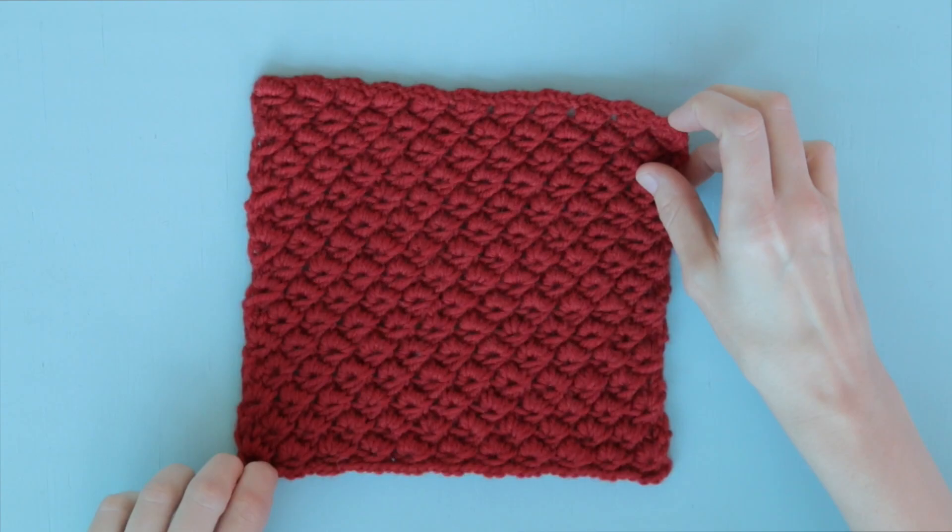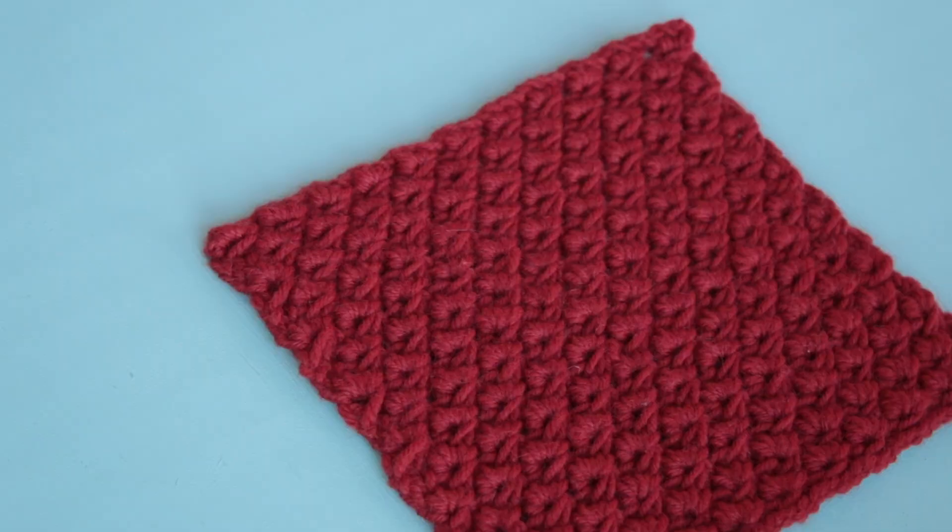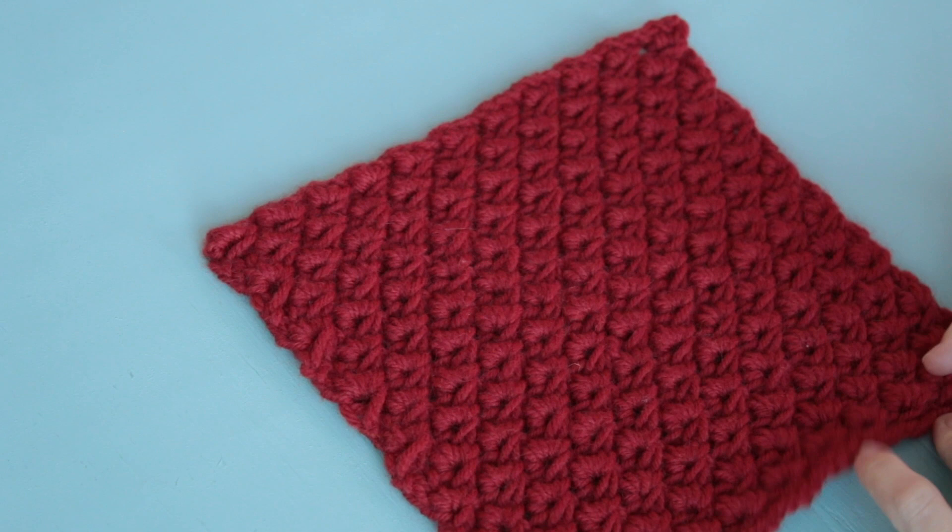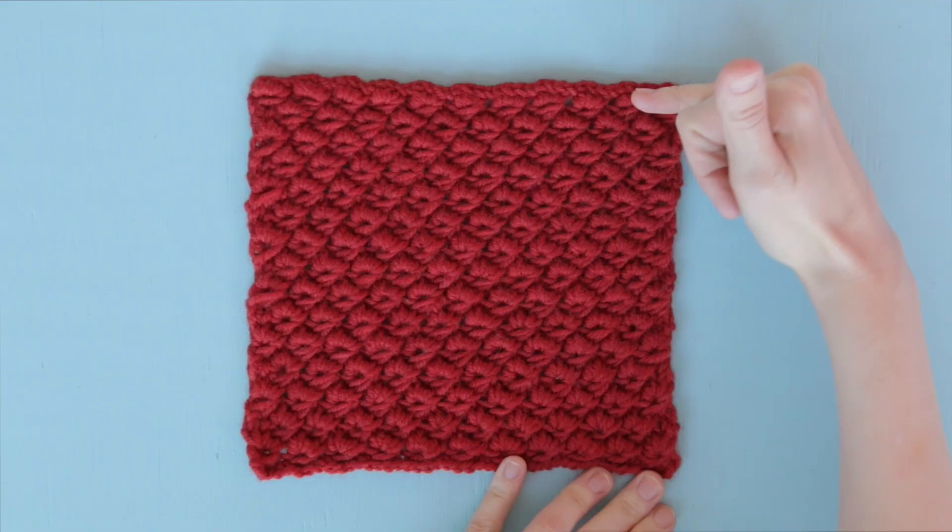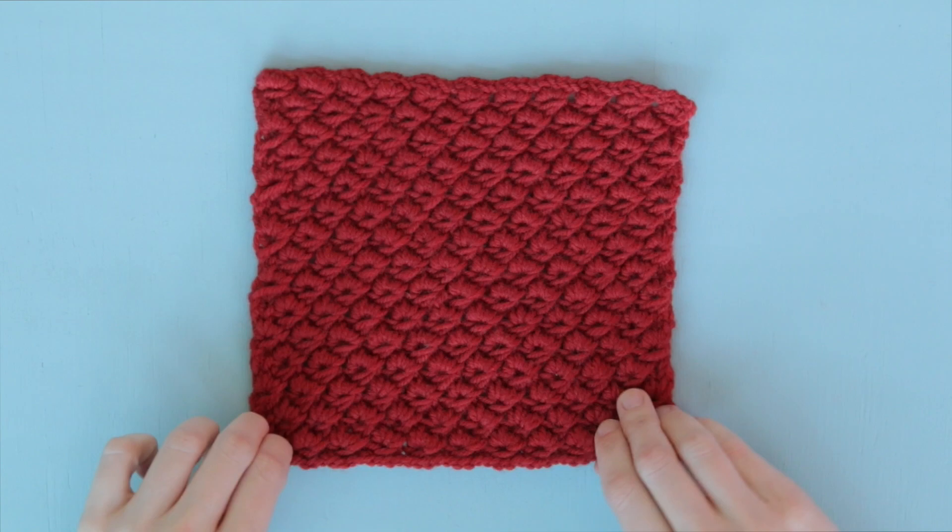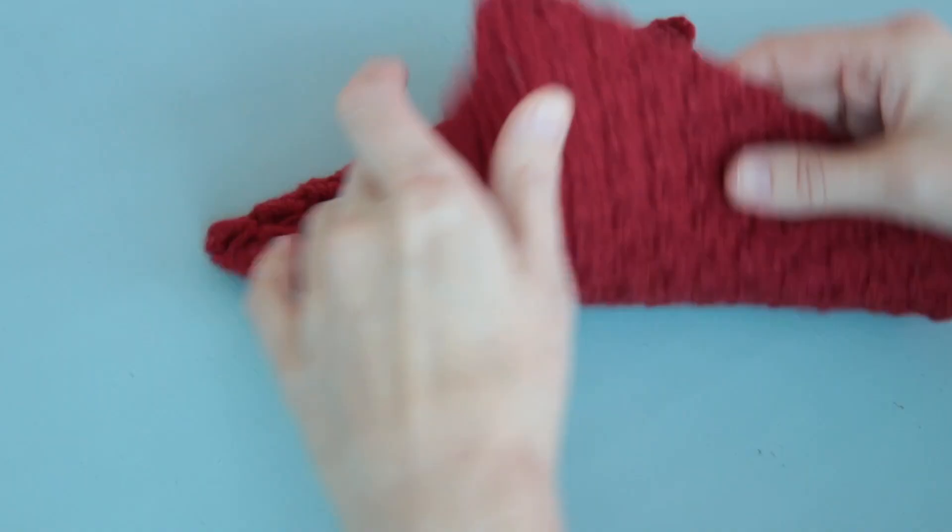Right here in front of me is the anemone stitch. This stitch is worked over a multiple of four stitches across and over the course of four rows vertically. You can see here that this really dense, old-timey looking stitch has a definite right side and wrong side, and it's one that you might not have come across before. So let's take a quick dive into how to work the anemone stitch.